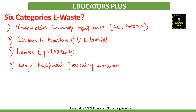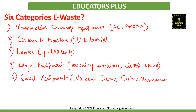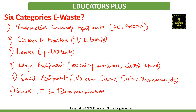The fourth category is Large Equipment, which includes washing machines, clothes dryers, dishwashing machines, electronic stoves, and large printing machines. The fifth is Small Equipment, including vacuum cleaners, microwaves, toasters, electric kettles, calculators, scales, radio sets, video cameras, electronic toys, and electronic tools. The sixth category is Small IT and Telecommunication Equipment, which includes mobile phones, GPS devices, pocket calculators, routers, personal computers, printers, and telephones.